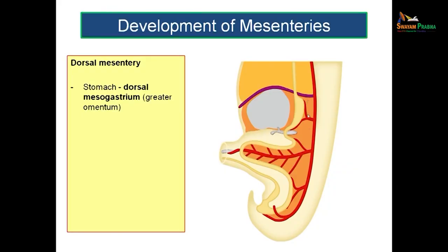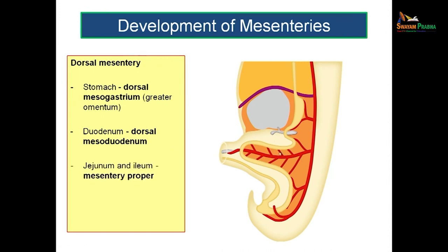From the lower end of the esophagus to the cloacal region, the gut is suspended from the posterior abdominal wall by a mesentery called the dorsal mesentery. In the stomach region, the dorsal mesentery is called the dorsal mesogastrium or greater omentum. The dorsal mesentery suspending the lower end of the esophagus along with the greater curvature of the stomach is known as the greater omentum. For the initial segment of duodenum it is called the dorsal meso-duodenum, for the jejunum and ileum it is the mesentery proper, and in the colon it is called the dorsal mesocolon.